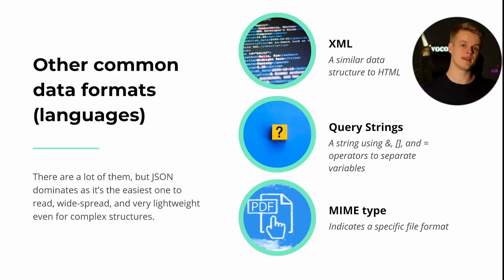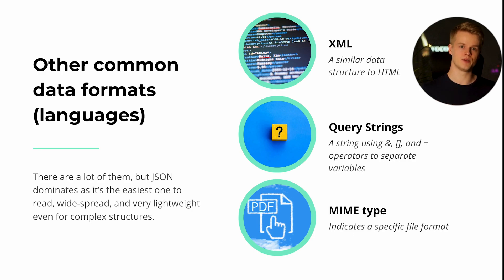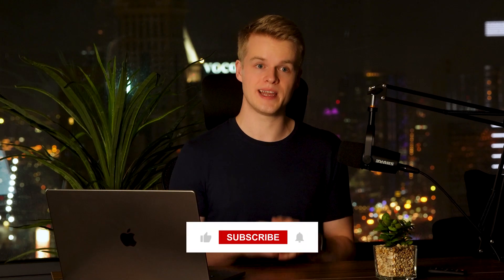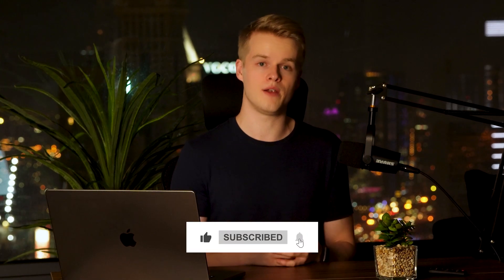MIME types are a little different — they allow you to stream files through a webhook, meaning you get binary data back from an endpoint rather than JSON or XML. You can take all of that data, drop it into a local file, name it, give it the correct file extension, and save it — essentially creating a file. Those are the main data structures I've encountered over the years, and JSON is still the biggest one that almost everyone uses.